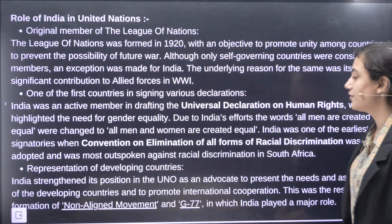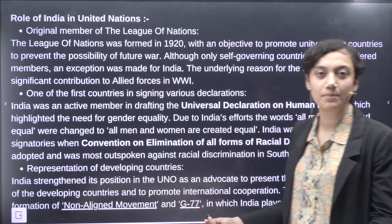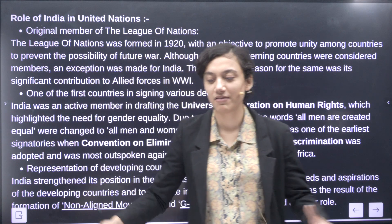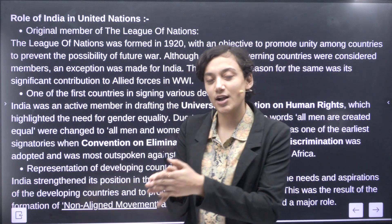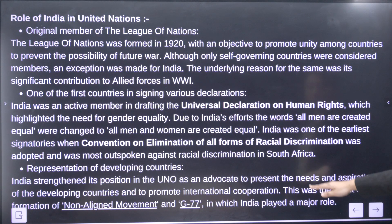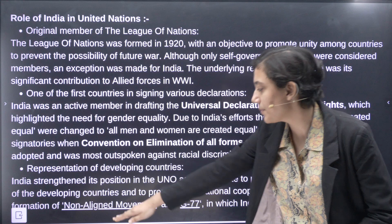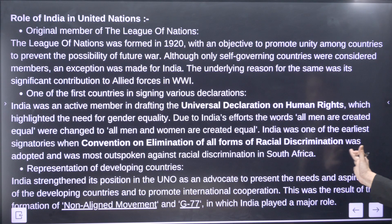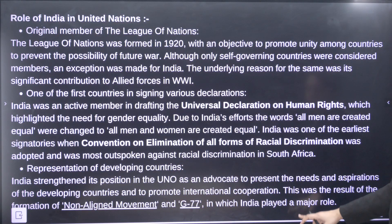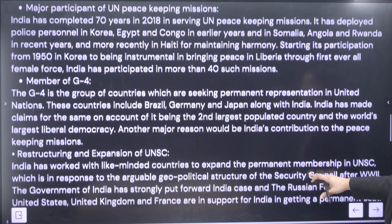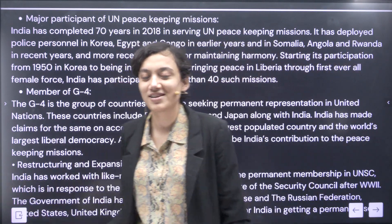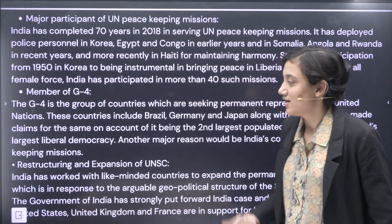Representation and developing countries — India is developing, so India is a representative of developing countries. India strengthened its position in the UNO as an advocate to present the needs and aspirations of developing countries and to promote international cooperation. This was the result of the formation of the Non-Aligned Movement and G-77, in which India played a major role.